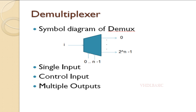For example, in a 1-to-2 DEMUX, if select is 0, the input will be routed to output 0. If select is 1, then the input will be routed to the first output bit. Likewise, we can have 2^N outputs with respect to N number of selection bits. This is the simple demultiplexer diagram.